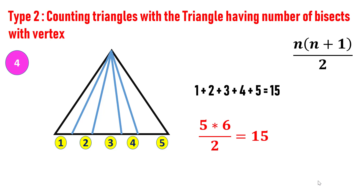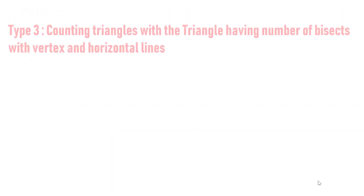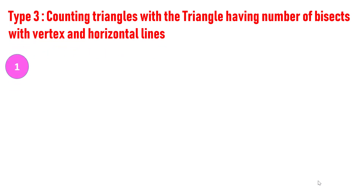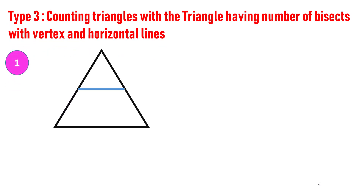Try both tricks and share which one you feel is better in the comment section. That's all in type two. Let's move on to type three — how to count number of triangles with a triangle having bisects from vertex and horizontal lines.